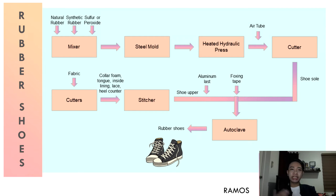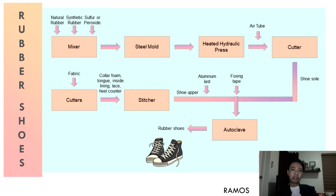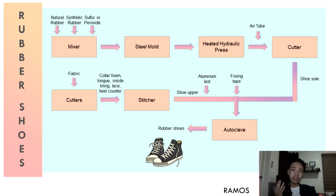The different parts are stitched together to form the upper part of the shoe. This is then placed over a shoe last, which is a mold that emulates a foot to give the shoe its shape. The last is made of aluminum in order to sustain and spread heat evenly during vulcanization. A foxing tape, also known as an outsole wall, which is a rectangular strip of rubber, is used to bond the upper and the soles. Finally, the shoes are sent to an autoclave for vulcanization.